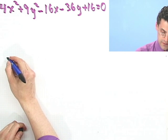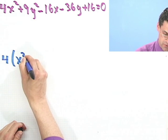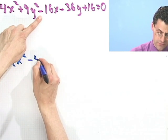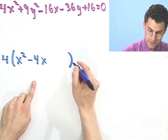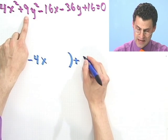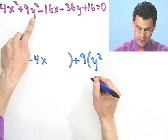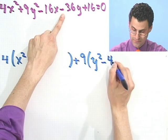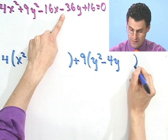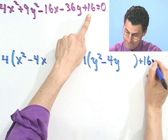And I'm gonna do that in the following way. So it's gonna look like this: 4 times (x² - 4x) and then I factor out the 9, I see 9 times (y² - 4y), and then don't forget the plus 16 that's just sort of hanging out there, and that equals 0.